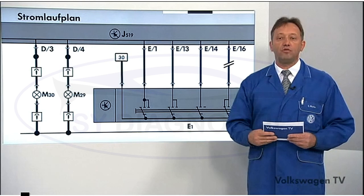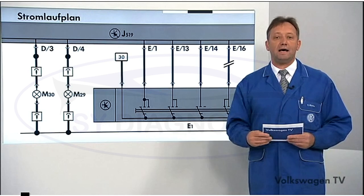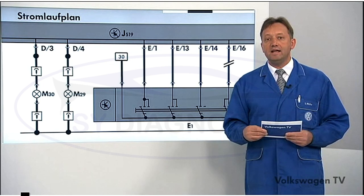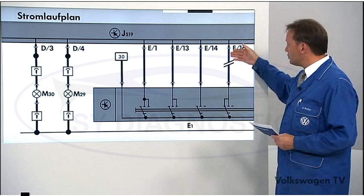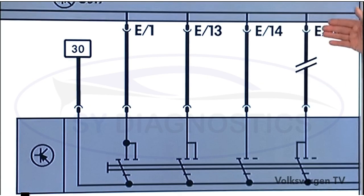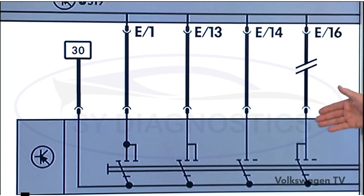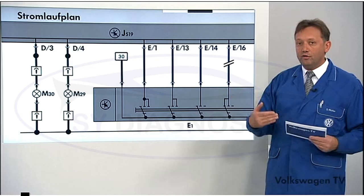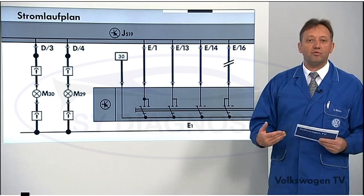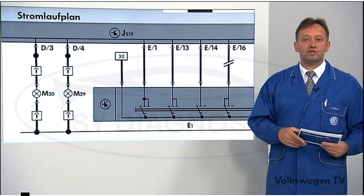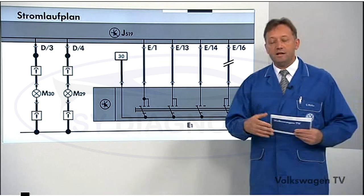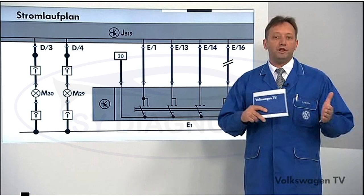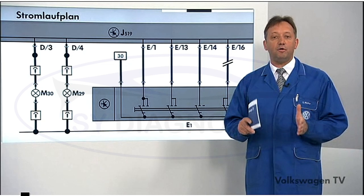As the control unit scans the switch position periodically - whether daytime running light is switched on or off - there is voltage from the electrical system control unit, but there isn't any switch position that has been defined, because all the switches are open. Because of the interruption in the line, the switch seems to be open. Therefore, the control unit assumes that the switch position has not been defined, and turns the light on for safety reasons.